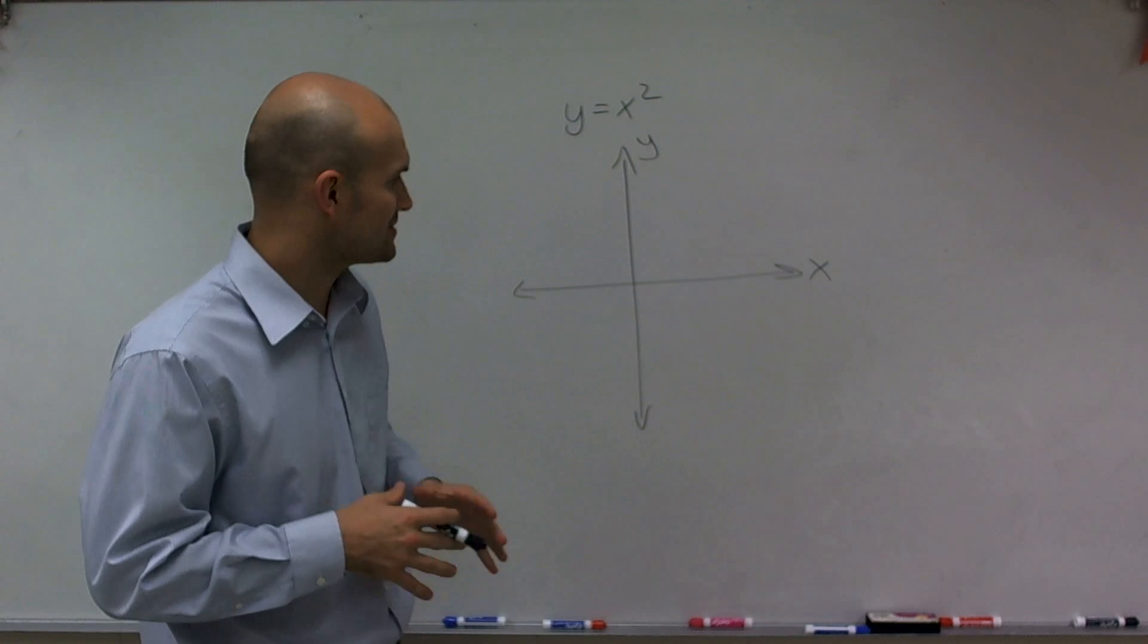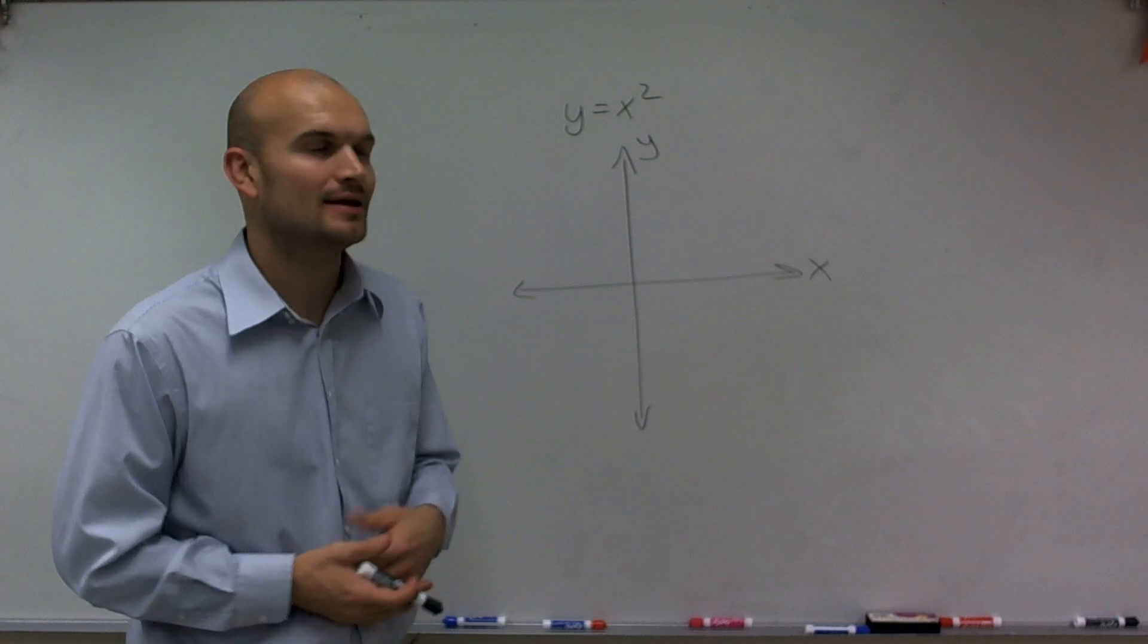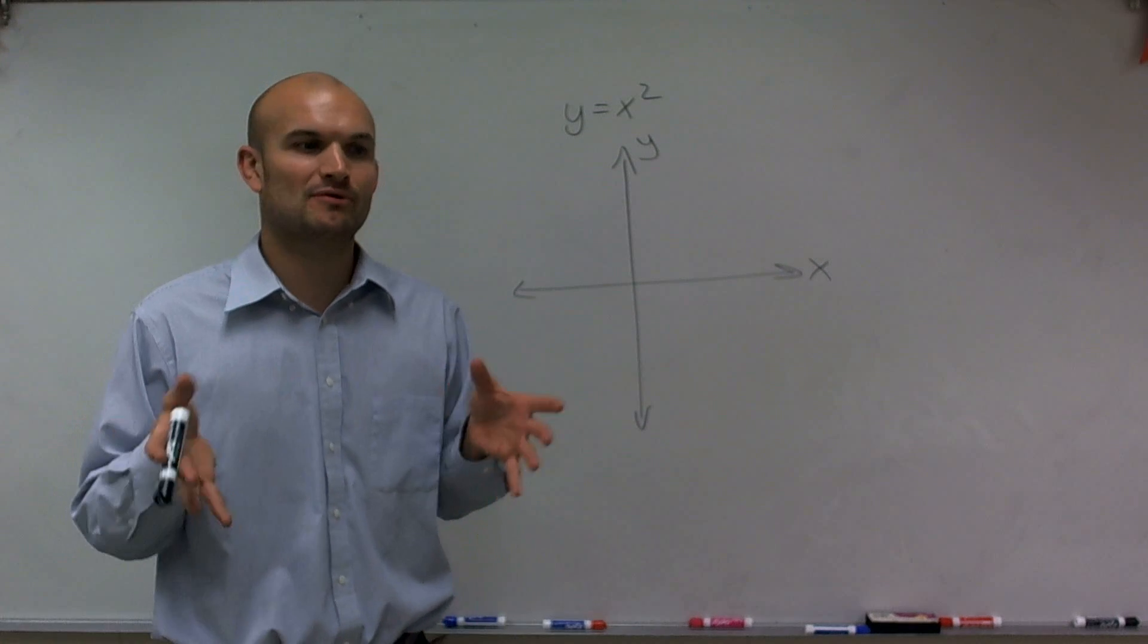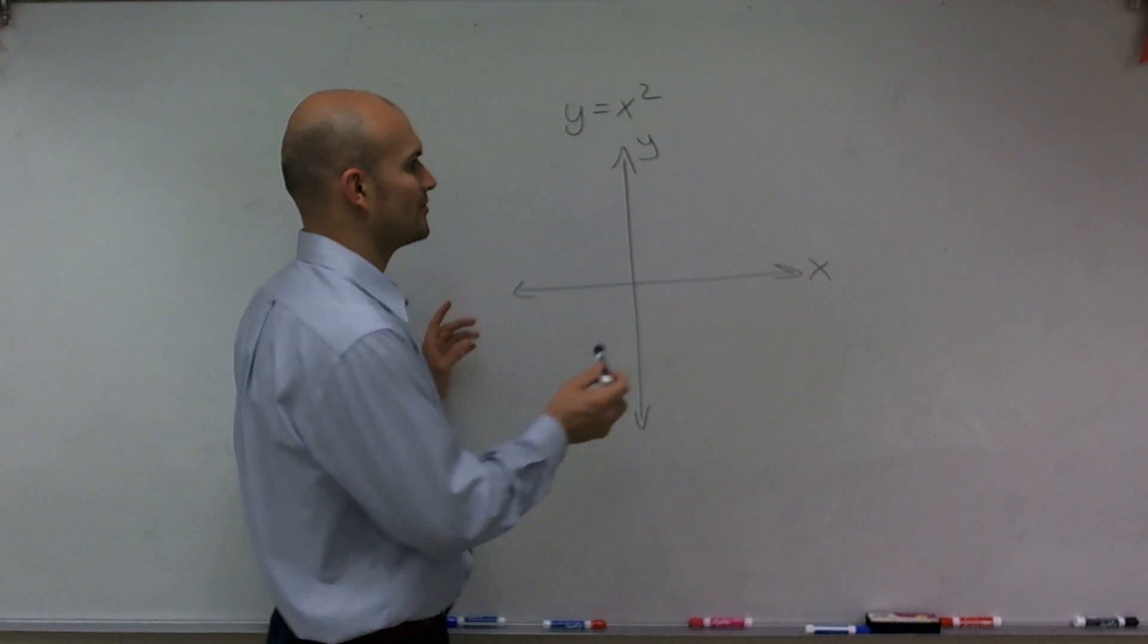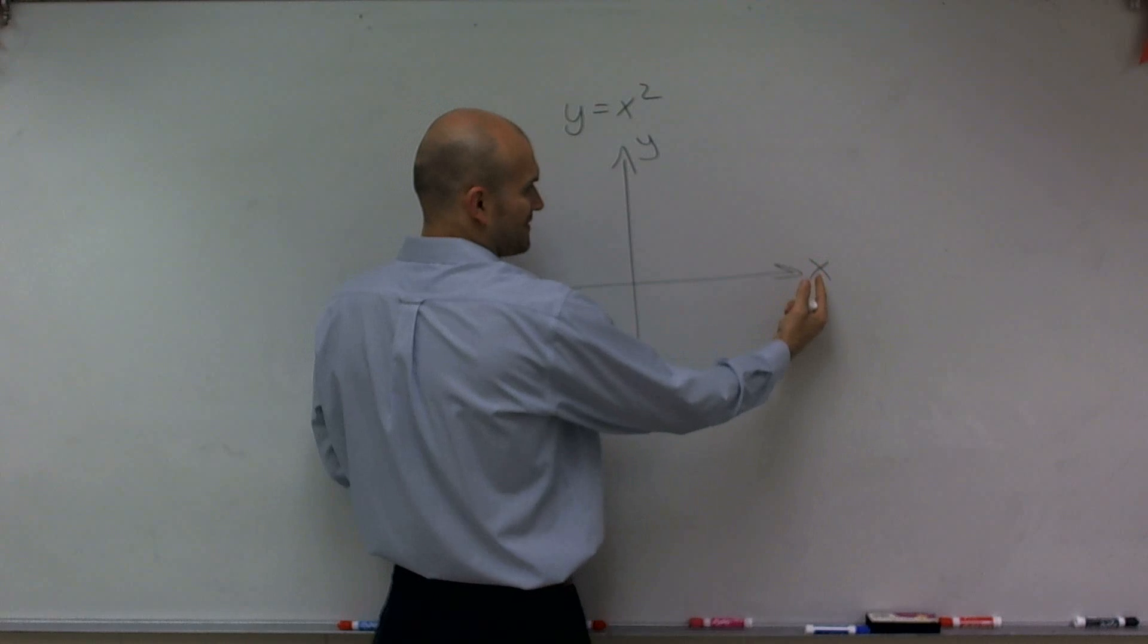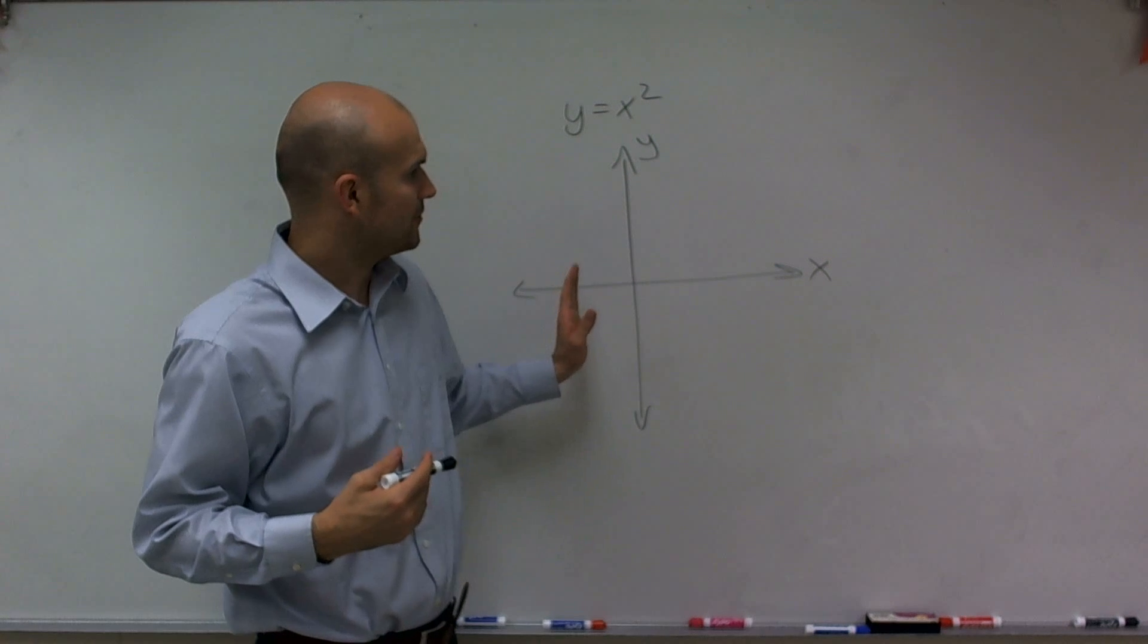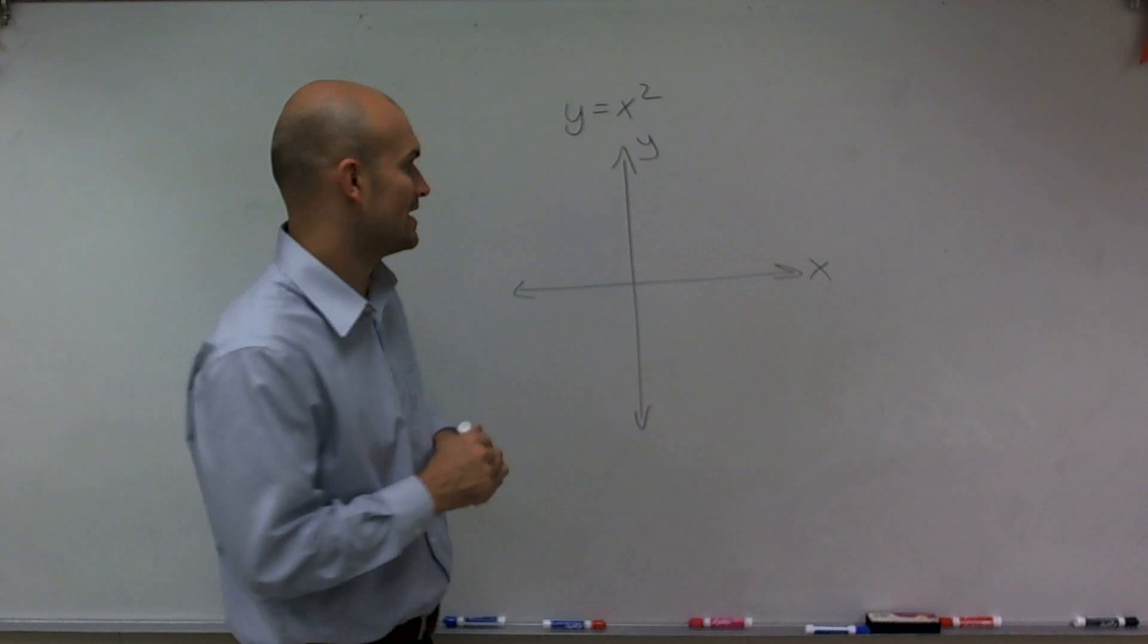So what we're going to do to graph y equals x squared is I'm going to use a table method. And if you remember, when we first learned how to graph lines, we remember the Cartesian coordinate system. We have an x-axis and a y-axis, where all the points, a coordinate point, has an x and a y-coordinate.